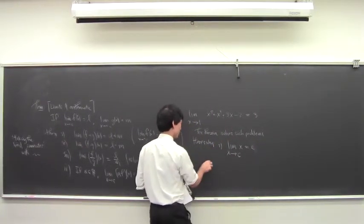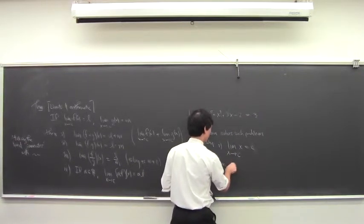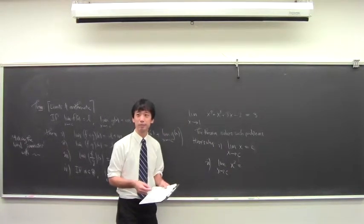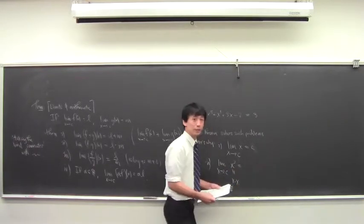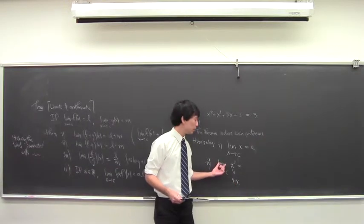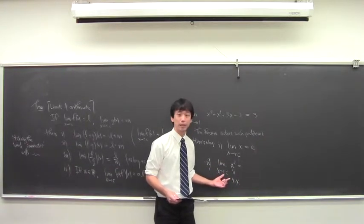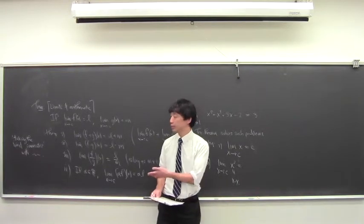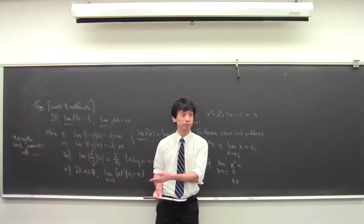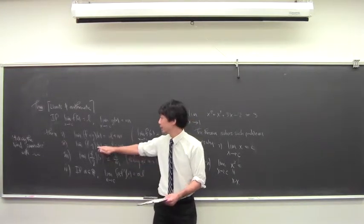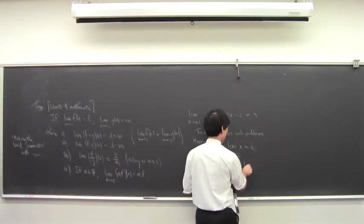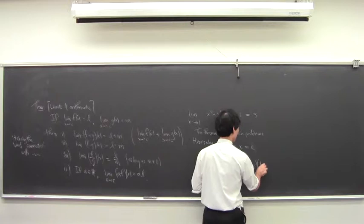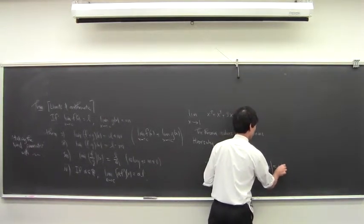So you make a bunch of observations. First observation: the limit of x as x approaches c is c. Second observation: the limit of x squared as x approaches c is going to be c squared. Why? You think of this as one function times another — it's x times x. So it's the limit of x times x as x approaches c. We use part two of the theorem: the limit of a product is the product of the limits. So you get the limit of x times the limit of x, which is c times c — c squared.